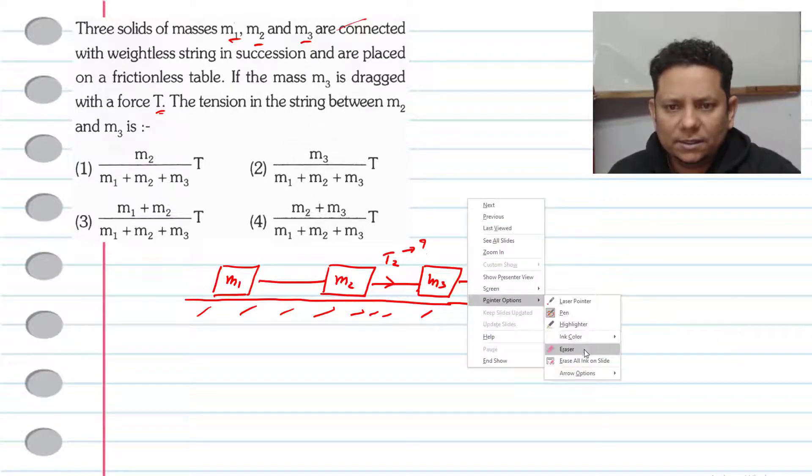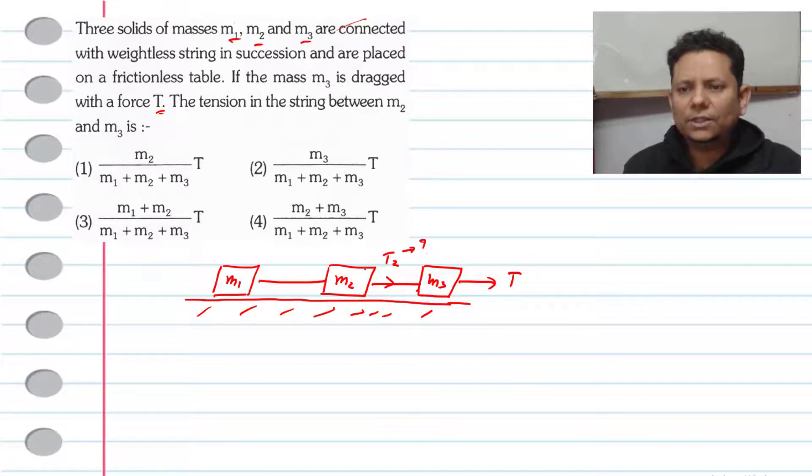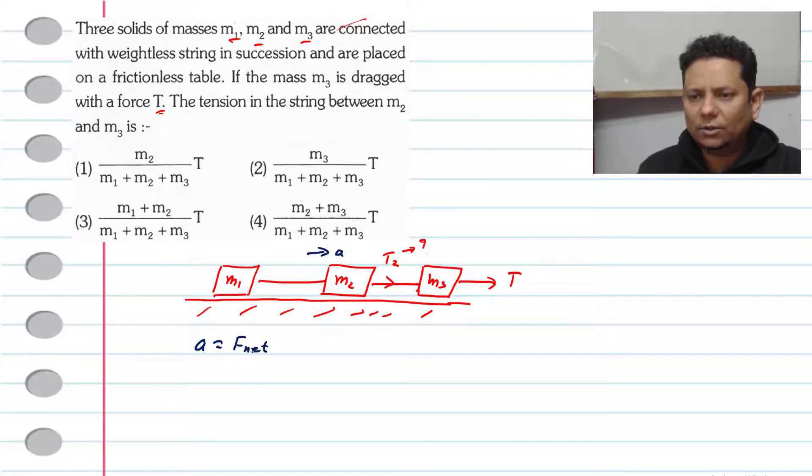Let me change pen color. All right. So, just like we have learned in theory, because you have connected masses on a frictionless surface, they will have one common acceleration. That acceleration, by the second law of motion, will be equal to F net divided by your total mass. So, the acceleration will be T divided by total mass, this will be M1 plus M2 plus M3.